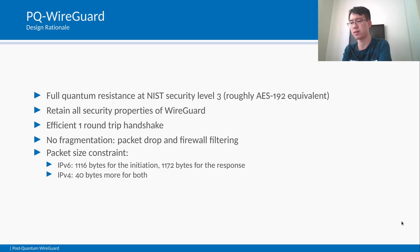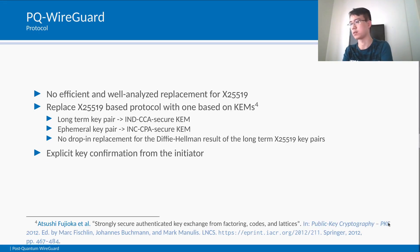This constraint alone prevents one from using many NIST candidates already. As explained earlier, the WireGuard protocol is based on X25519, which does not have an efficient, well-analyzed post-quantum replacement. Therefore, we replace the Diffie-Hellman-based key exchange with one based on KEMs. In short, one replaces the long-term key pair for identity with a key pair of an IND-CCA secure KEM, and the two ephemeral key pairs with one key pair of an IND-CPA secure KEM. Note that there is no drop-in replacement for the Diffie-Hellman results of the long-term X25519 key pairs, which is a form of non-interactive key exchange. Not having this shared secret had some consequences, which we will discuss and fix. In addition, to allow a straightforward security proof, we add an explicit key confirmation message as suggested by Dowling and Patterson — the first application data from Alice no longer serves implicitly as key confirmation.